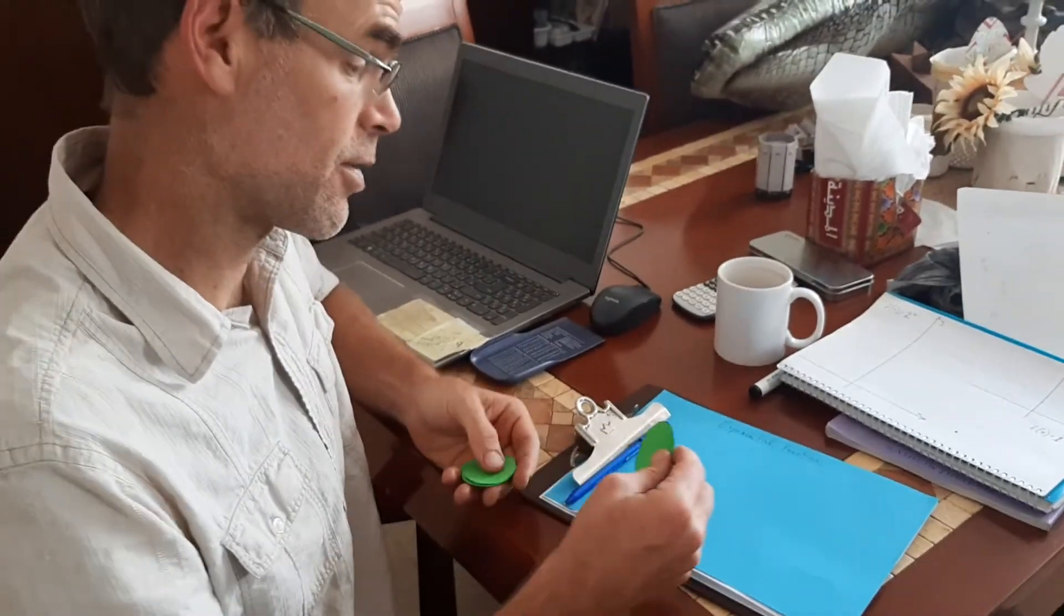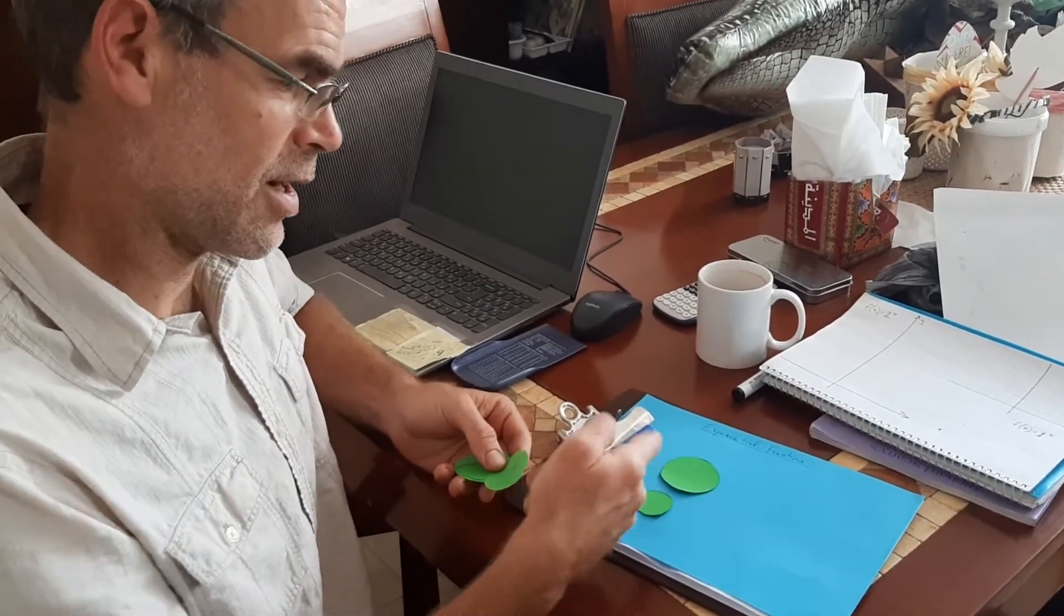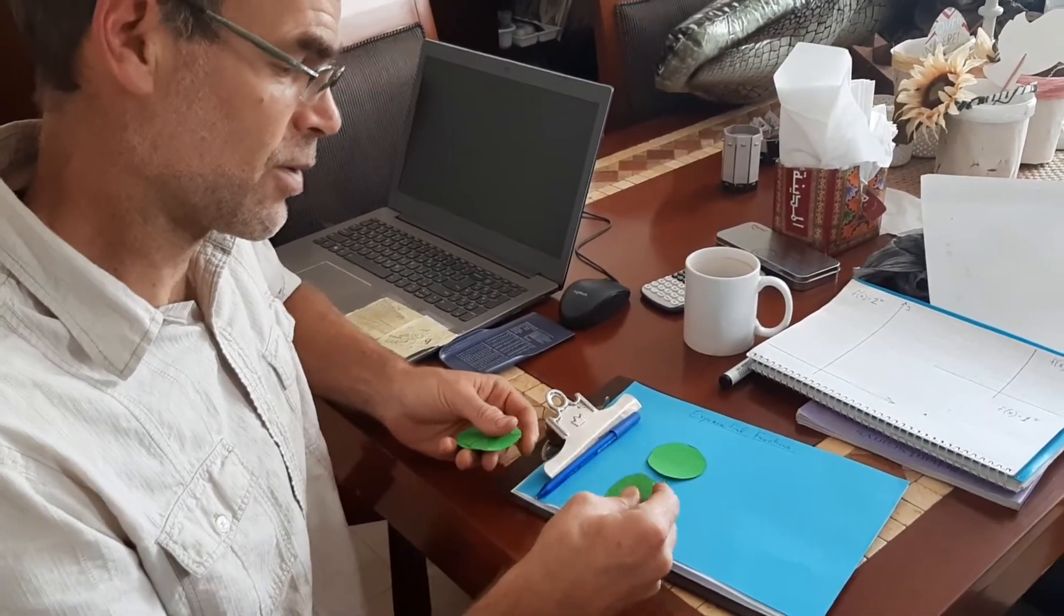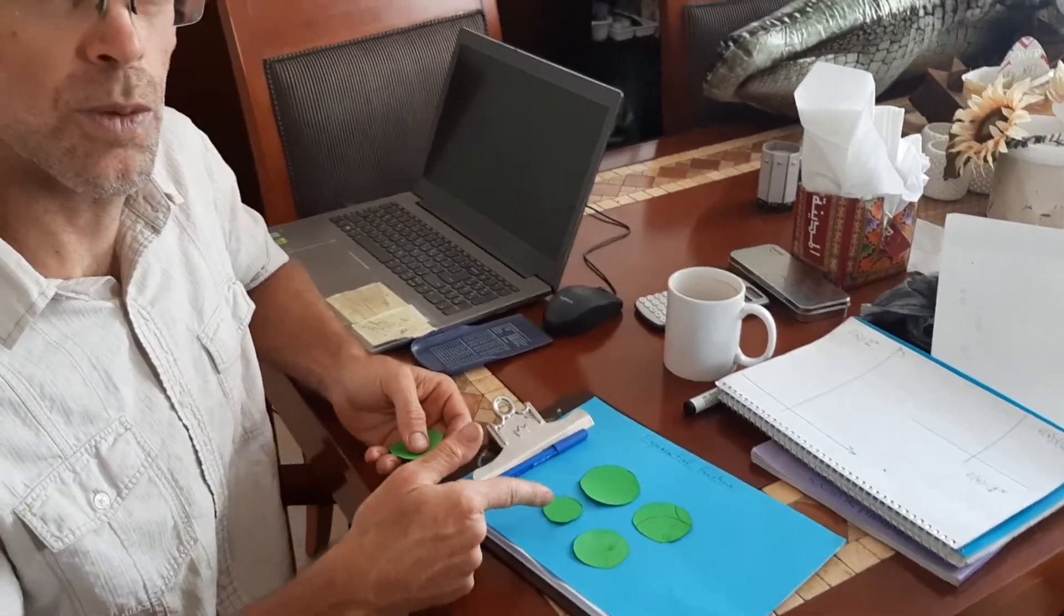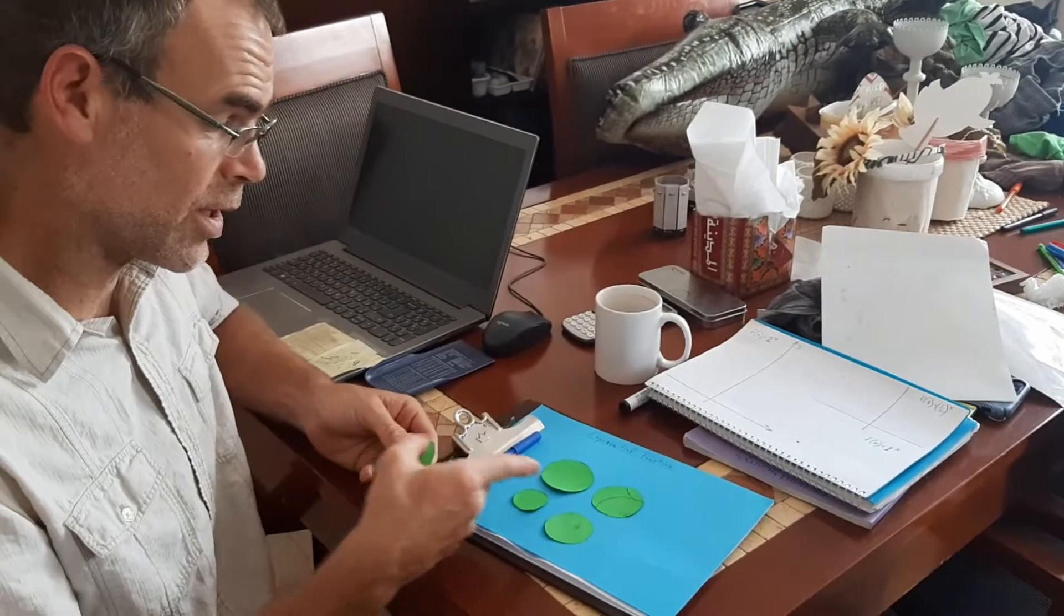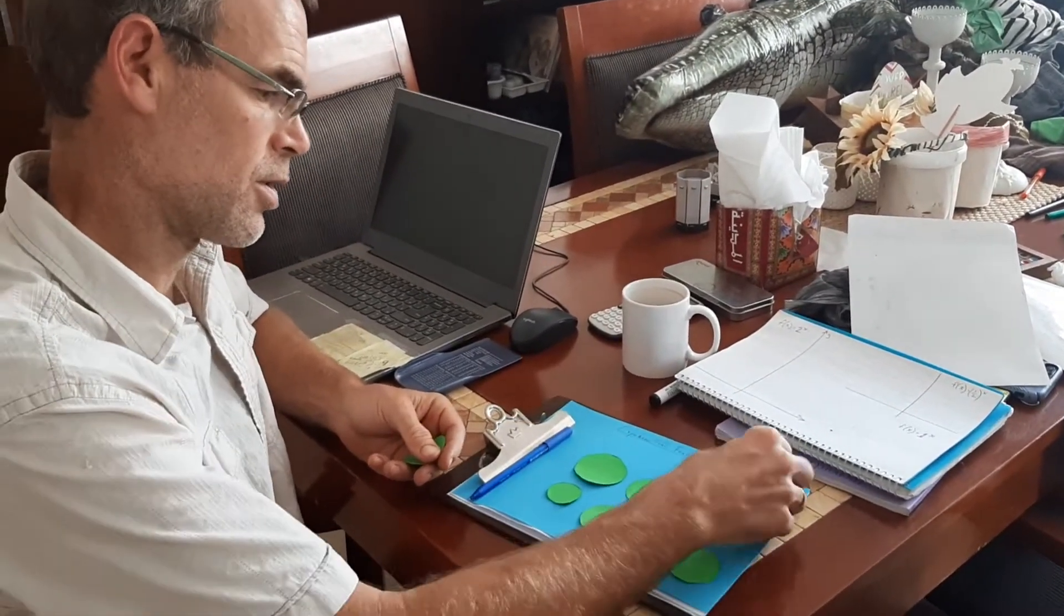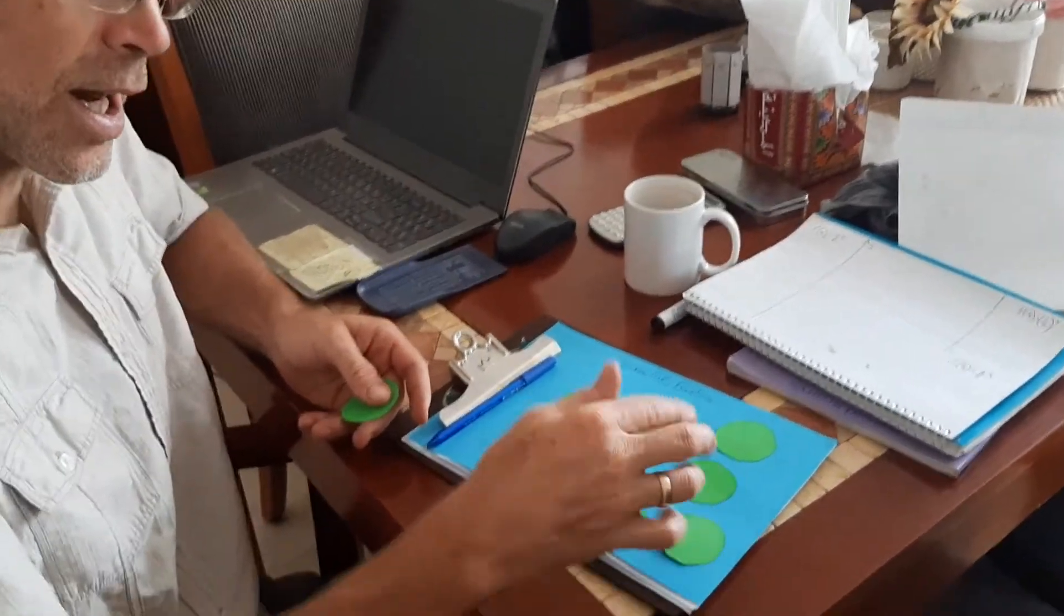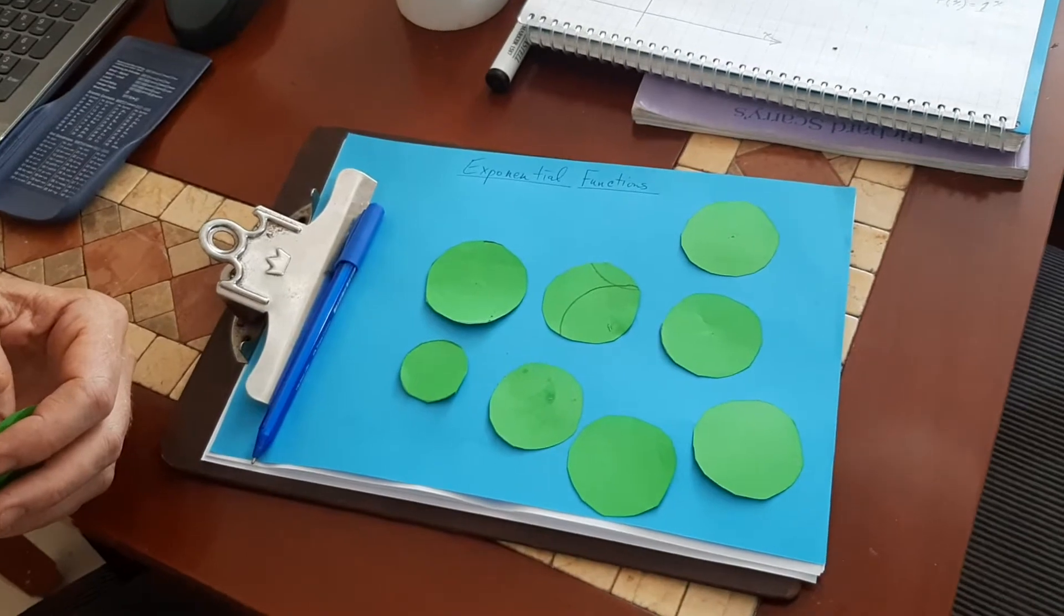So the next day, you have two lily pads. And that next night, each of them makes a clone. So you wind up with four. You start with one, then you got two, then you got four. And then each one of those four makes a clone. So you wind up with eight. And so on and so forth.